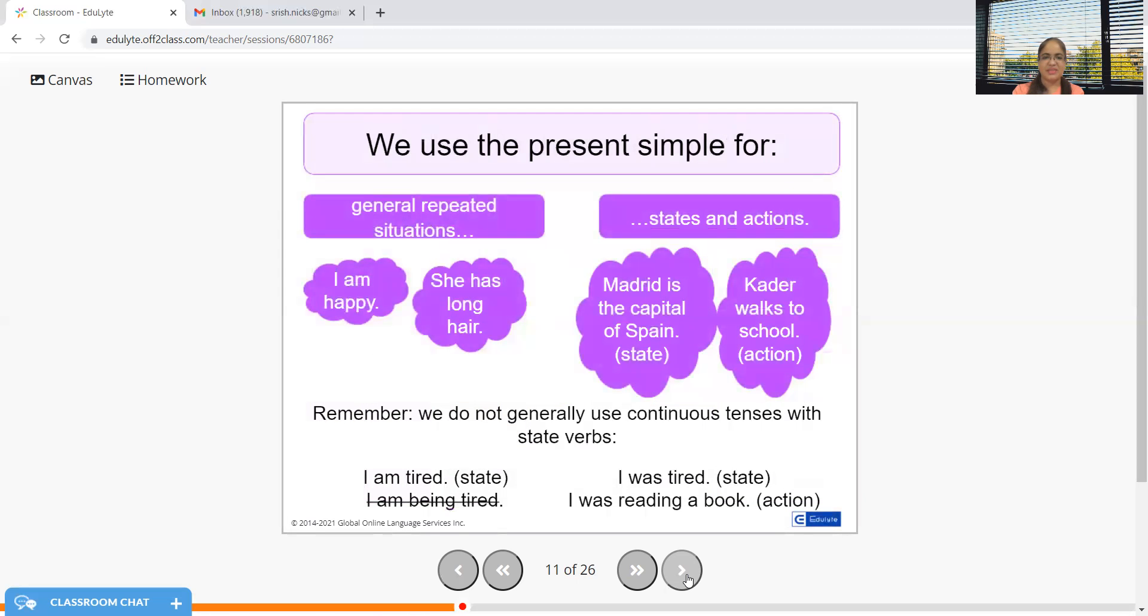We use present simple for general repeated situations: I'm happy, she has long hair - it is still there in existence. And maybe for the states and actions: Madrid is the capital of Spain, it will remain tomorrow as well.